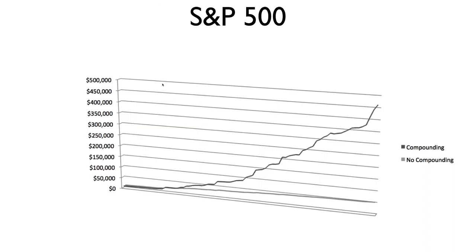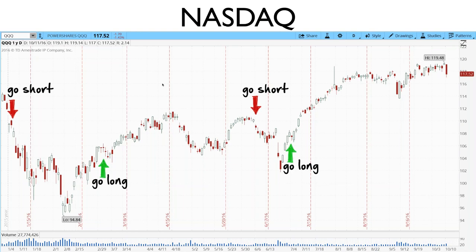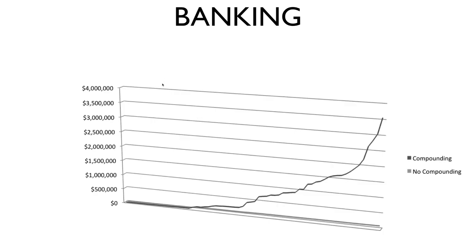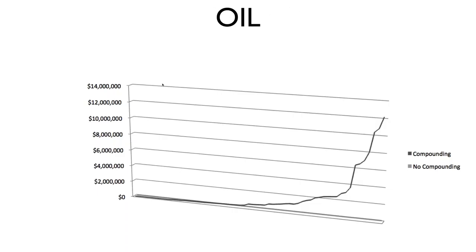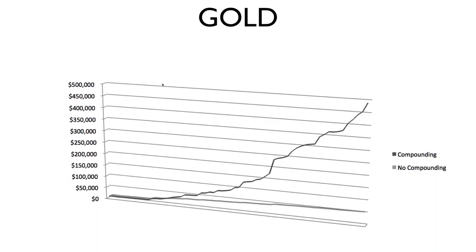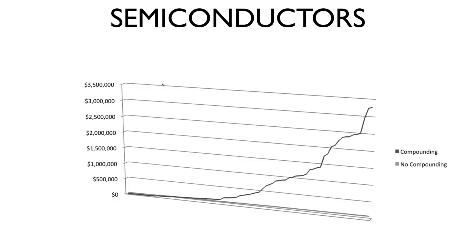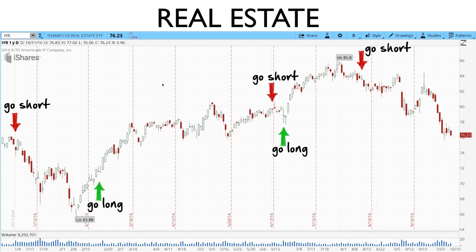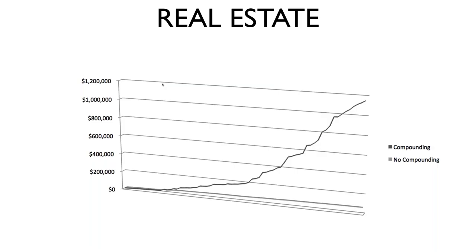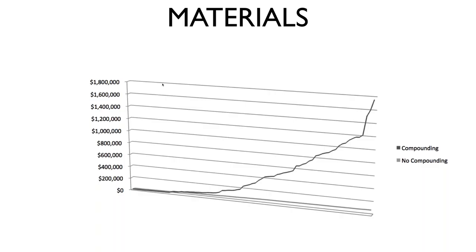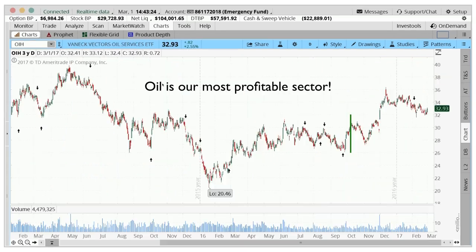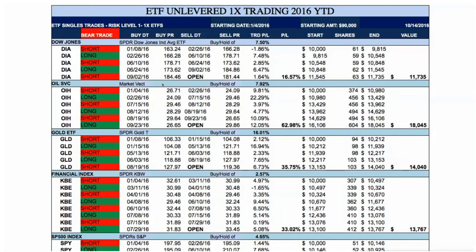The S&P 500 could have turned ten thousand dollars into over four hundred sixty thousand. The Nasdaq could have turned ten thousand into over a million. Banking could have turned ten thousand into about three point five million. Oil — my favorite — could have turned ten thousand into twelve million with compounding; that's the power of an extremely high win rate and a high number of trades. Gold could have turned ten thousand into nearly five hundred thousand. Semiconductors: ten thousand into nearly three point five million. Real estate: ten thousand into over a million. Materials: ten thousand into nearly one point eight million.